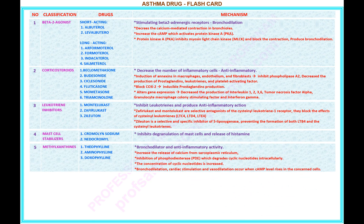Number 5 — name of the classification: methylxanthines. Drugs under this classification: 1) theophylline, 2) aminophylline, 3) doxofylline. Mechanism: bronchodilator and anti-inflammatory activity. Increase the release of calcium from the sarcoplasmic reticulum. Inhibition of phosphodiesterase (PDE), which degrades cyclic nucleotides intracellularly; the concentration of cyclic nucleotides is increased. Bronchodilation, cardiac stimulation and vasodilation occur when the cAMP level rises in the concerned cells.